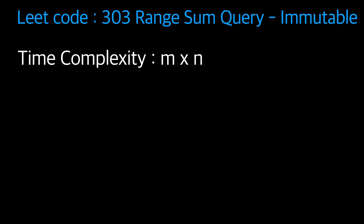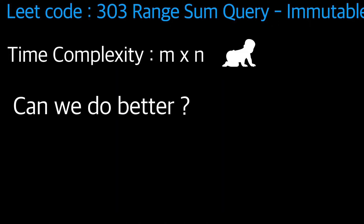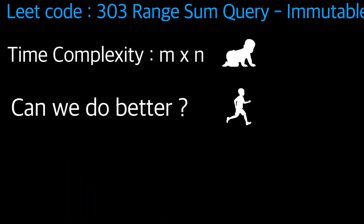For every query we have to traverse from left to right. There are m queries and n elements to traverse, so the time complexity is O(m * n). It's very time consuming - for every sub-query we have to traverse again and again. Can we do better? Yes, we can with the help of the prefix sum concept.